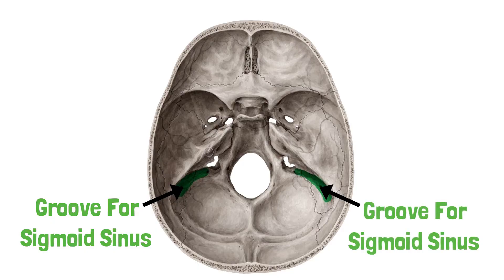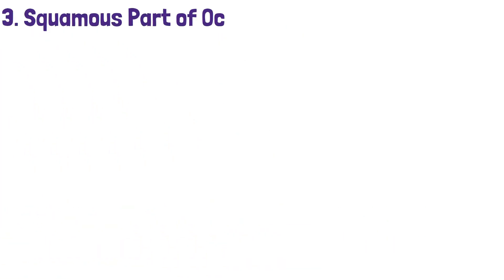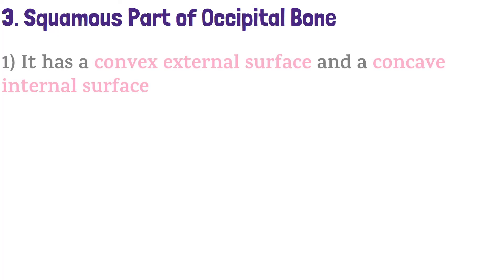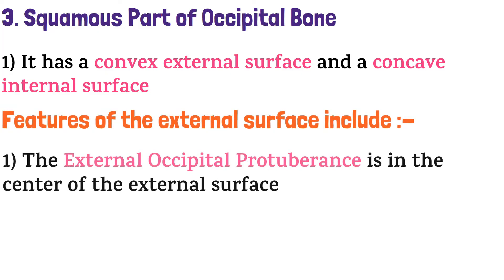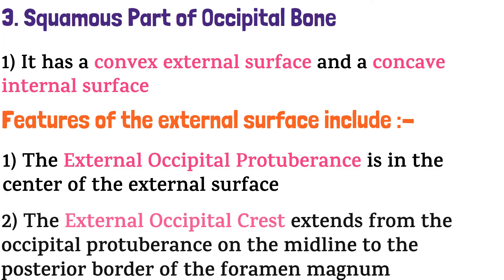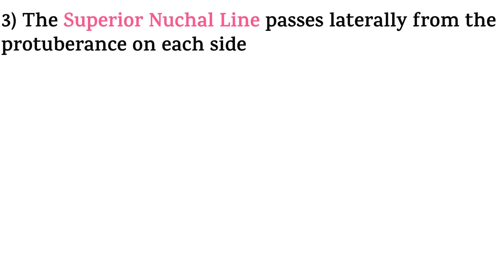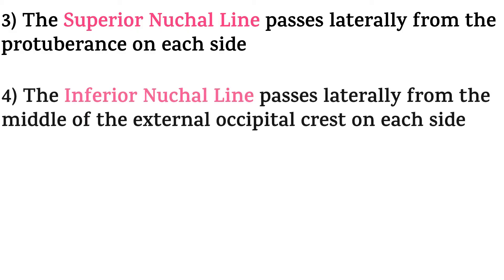With this we complete the condylar part and move on to the last part, which is the squamous part. It has a convex external and a concave internal surface. Features of the external surface include: the external occipital protuberance, located at the center of the external surface; the external occipital crest, which extends from the occipital protuberance on the midline to the posterior border of the foramen magnum; the superior nuchal line, which passes laterally from the protuberance on each side; and the inferior nuchal line, which passes laterally from the middle of the external occipital crest on each side.